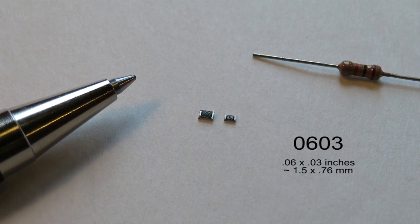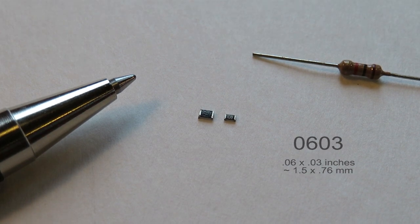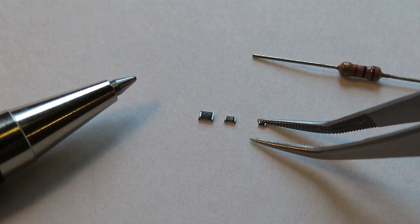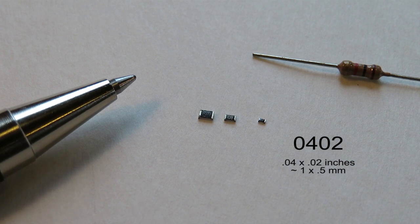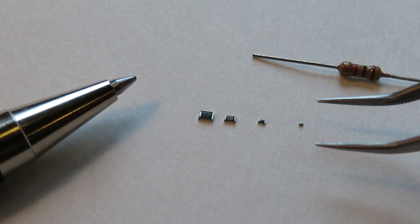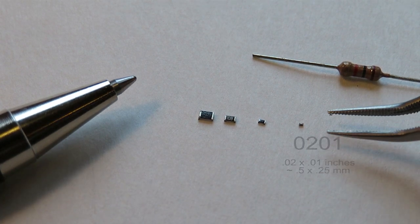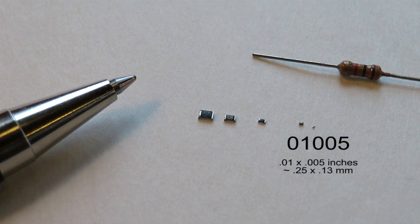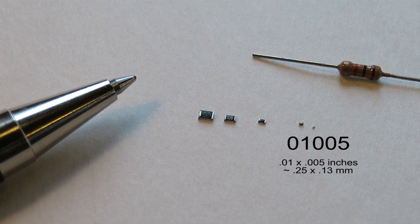This is an 0603. This is an 0402, 0.04 by 0.02 inches. This is an 0201. And this is the smallest SMT package, an 01005.